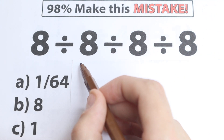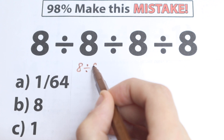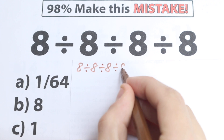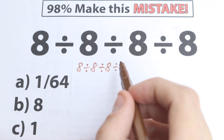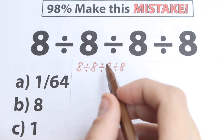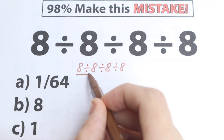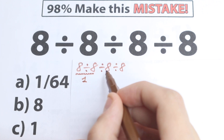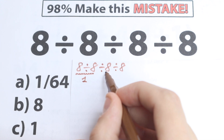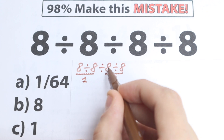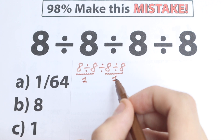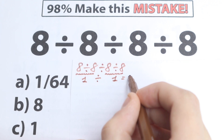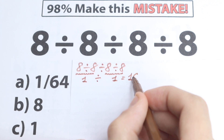Let's start with the first solution. We have 8 divided by 8, divided by 8, and divided by 8. One group of students solves it like this: from left to right, 8÷8 = 1, and on the right-hand side 8÷8 = 1 as well, so then 1÷1 = 1, giving Option C.